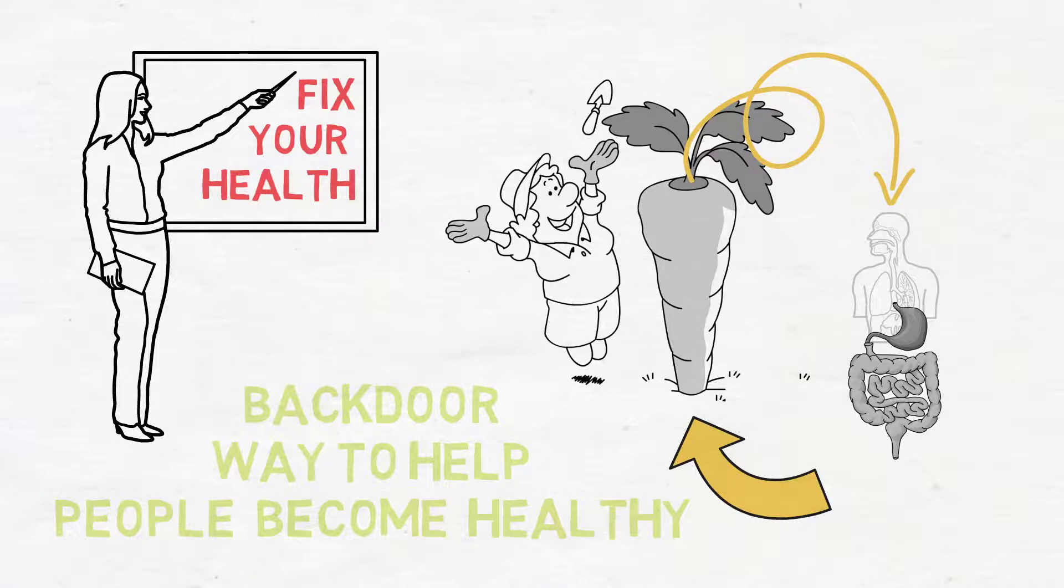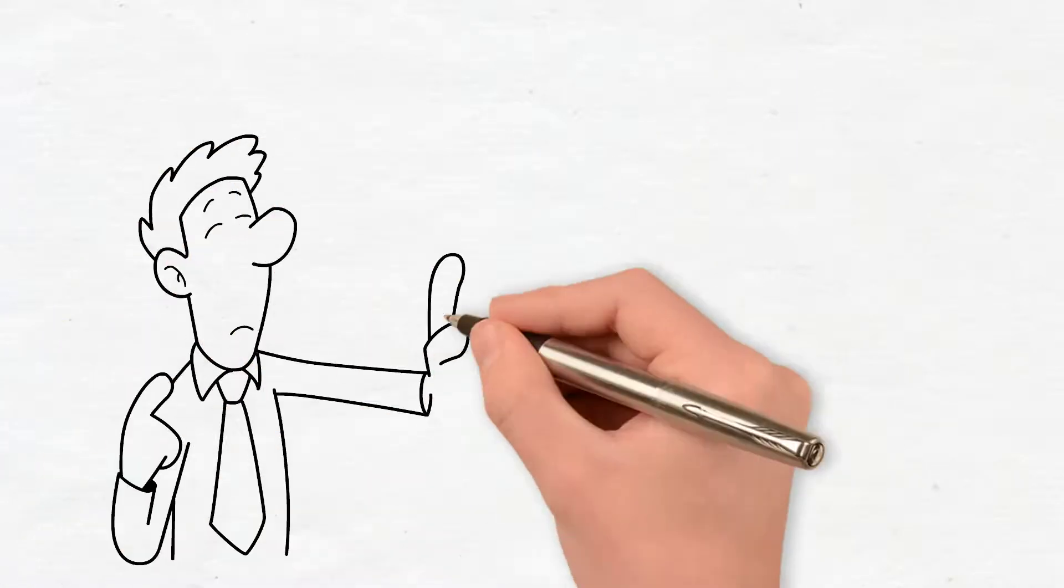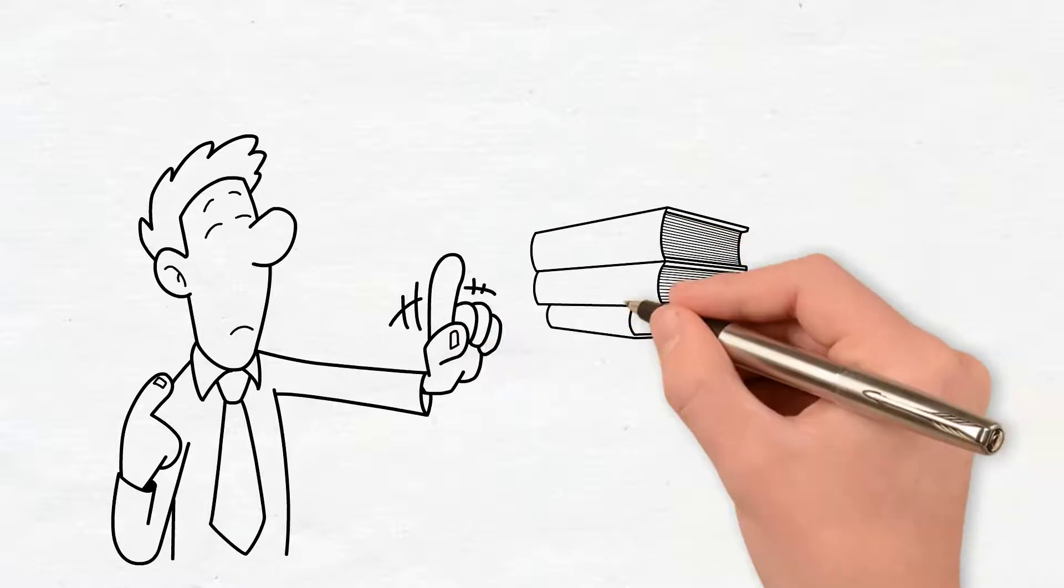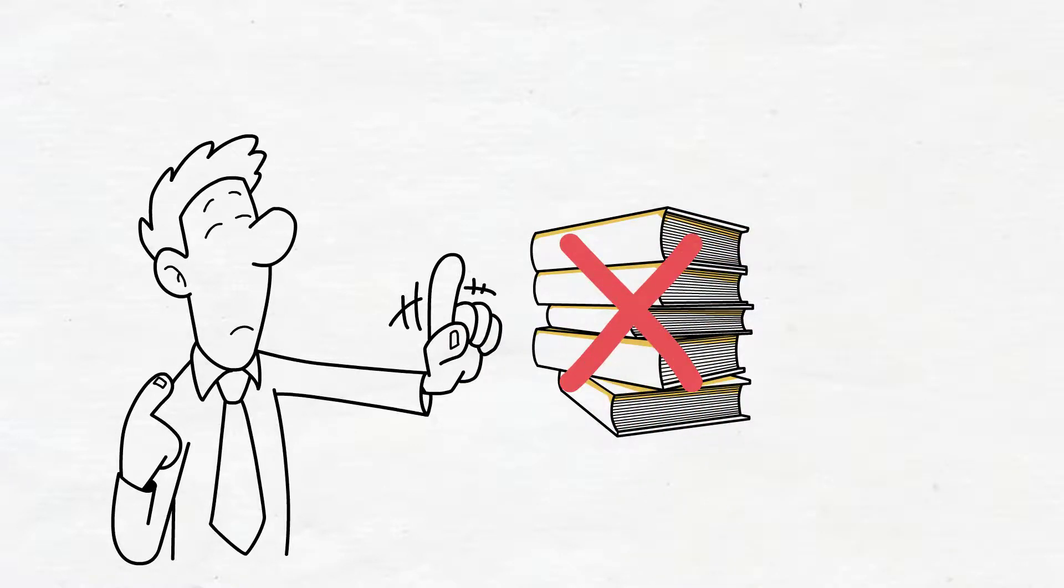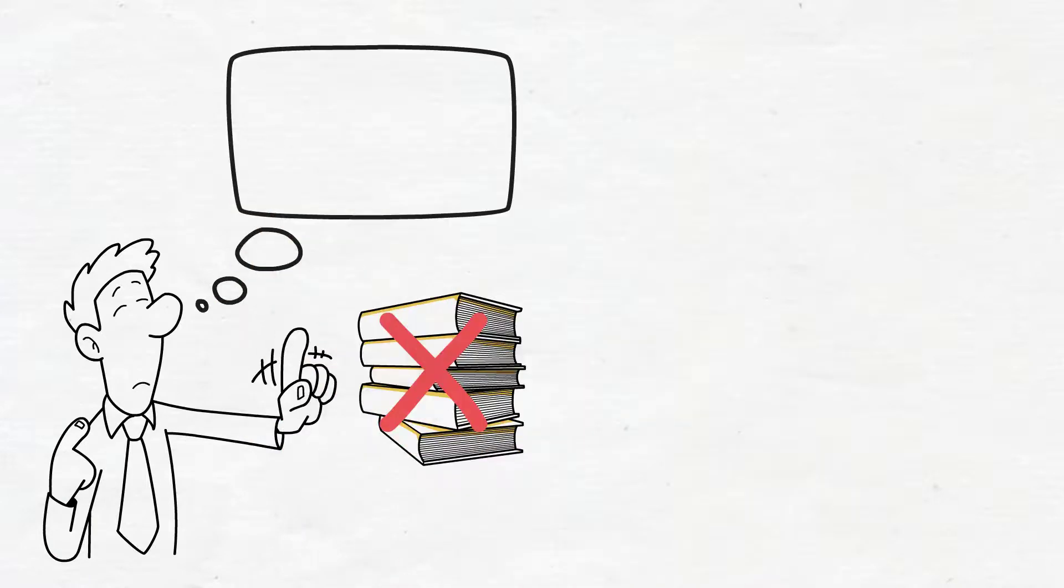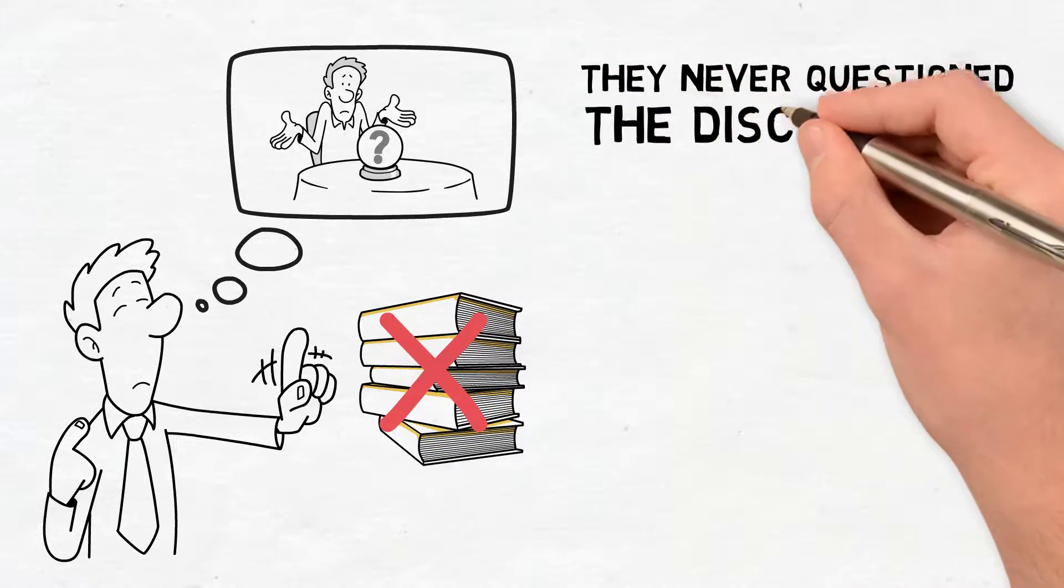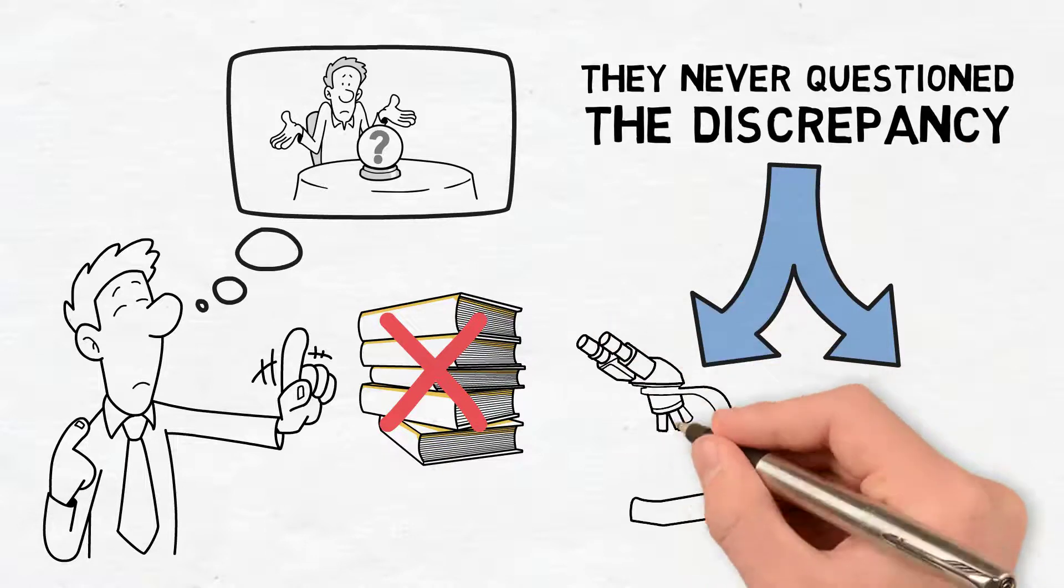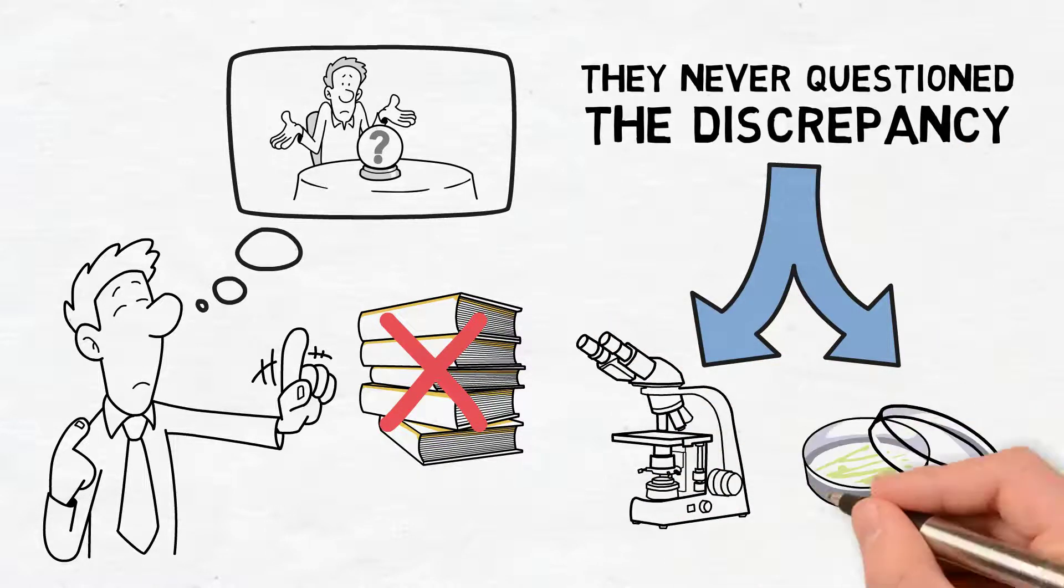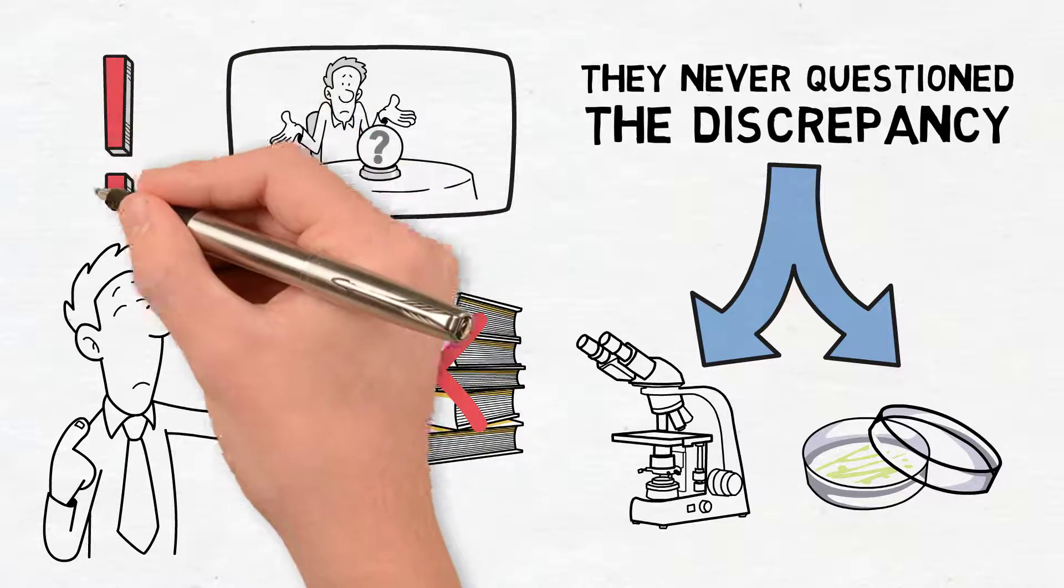Soil scientists who haven't read a book since they left graduate school, they're still mired back in this inappropriate understanding of what's actually going on in soil. They have no clue. They never questioned the discrepancy between what the microscope was telling them and what plate counts were telling them. Just completely right over the top of their head.